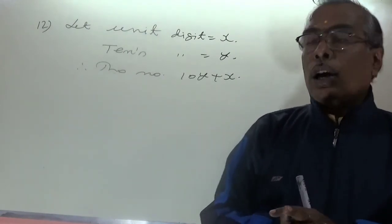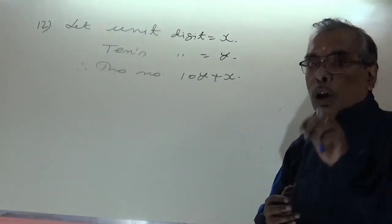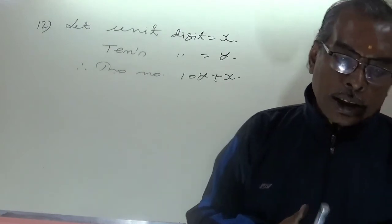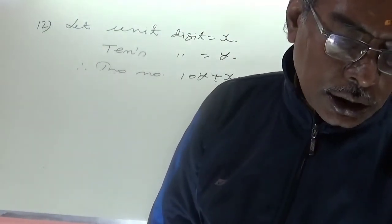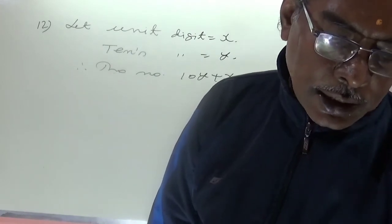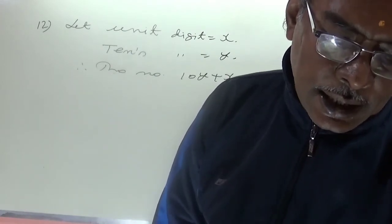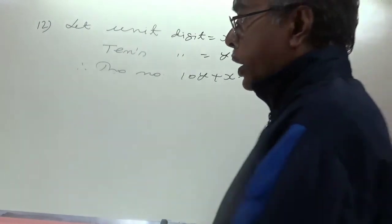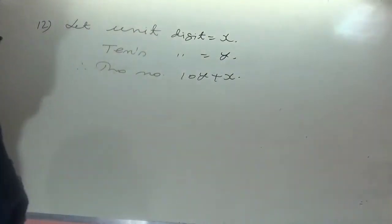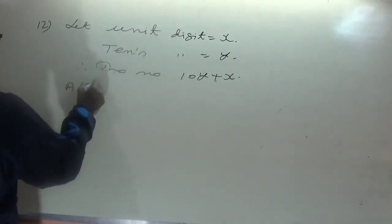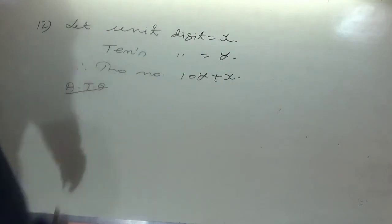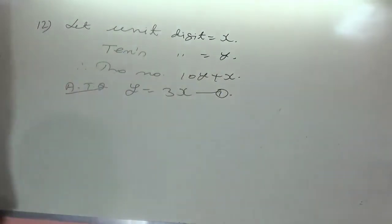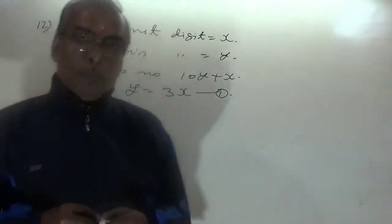Now solving question number 12. Two conditions are given. First condition: the digit in the tenth place is three times the digit at the unit place. So according to the question, y = 3x. This is equation number 1.